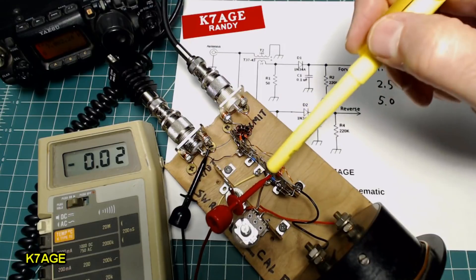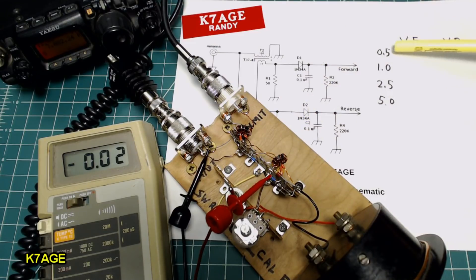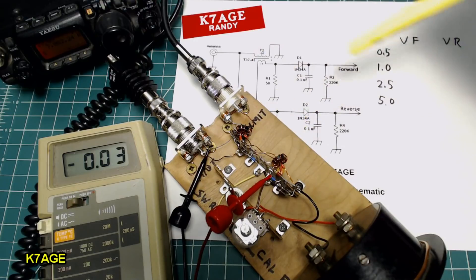So I have the voltmeter connected to the diode here and I'm going to measure the voltage at the half, one, two and a half, and five watts coming out of the radio. I will then reverse the connectors, move the meter over to the reverse diode and repeat the measurements and hopefully they'll come out close.